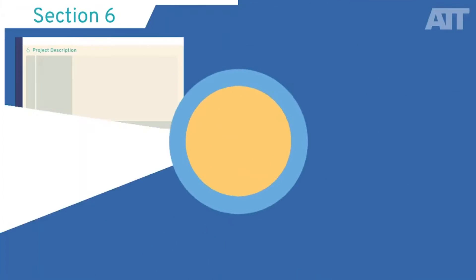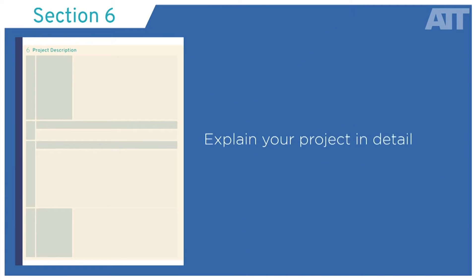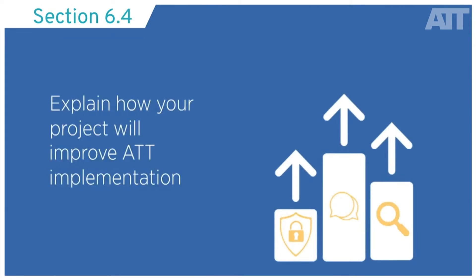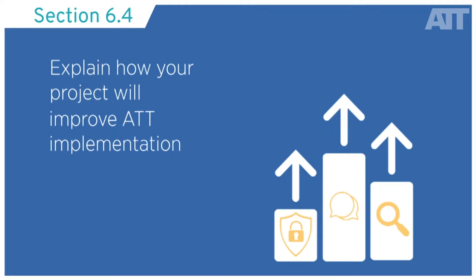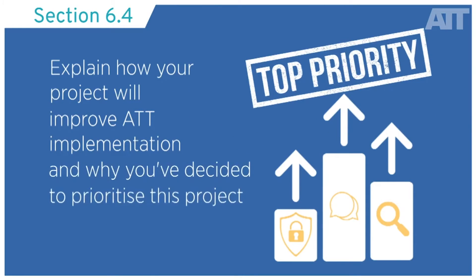Section 6 is where you should explain your project in detail. In 6.4, you should explain how your project will improve ATT implementation and why you've decided to prioritise this particular project now.